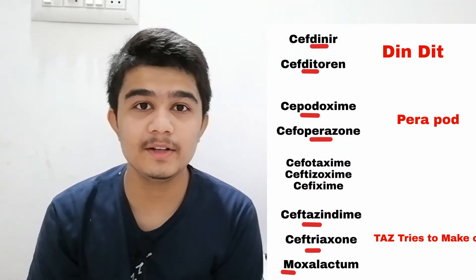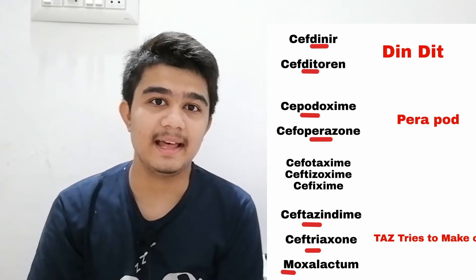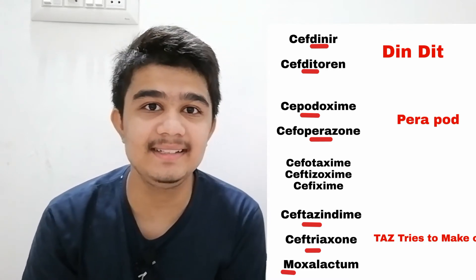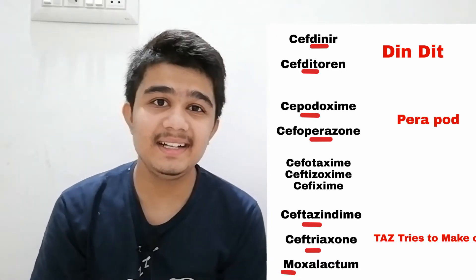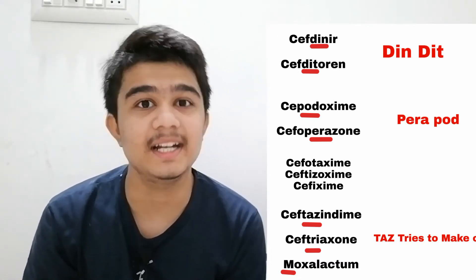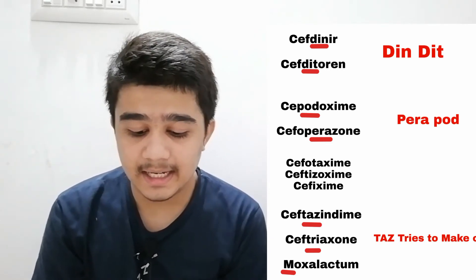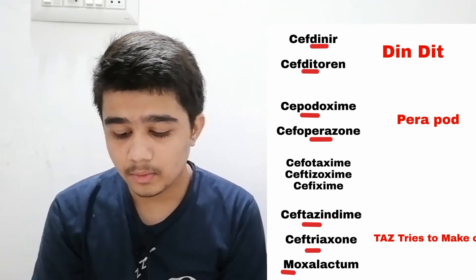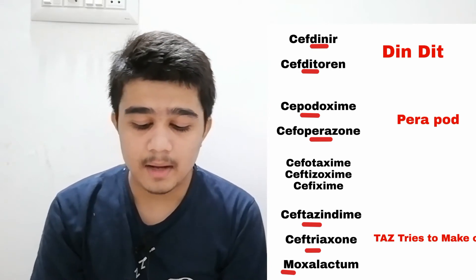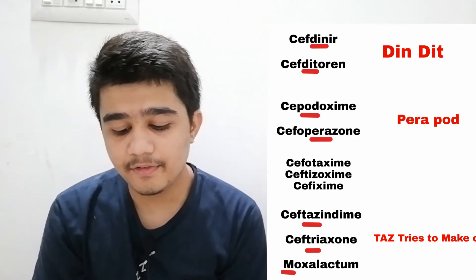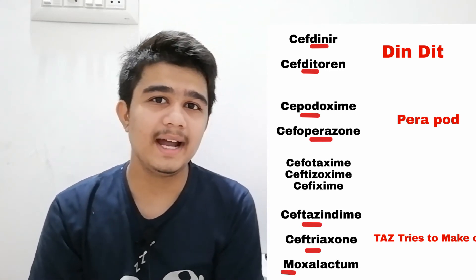For third generation cephalosporins, I've divided drugs by their letter patterns. Two drugs contain 'DI' in their name — mnemonic is 'DIN DIT': 'DIN' means Cefdinir and 'DIT' means Ceftidoren. Two drugs contain 'P' — mnemonic is 'PARAPOD': 'PARA' means Cefoperazone and 'POD' means Cefpodoxime.